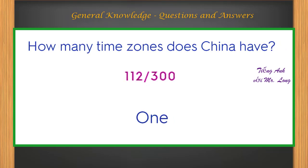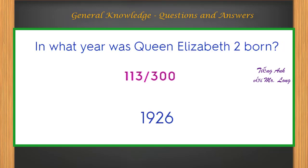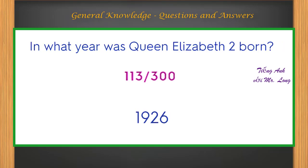How many time zones does China have? One. In what year was Queen Elizabeth II born? 1926.